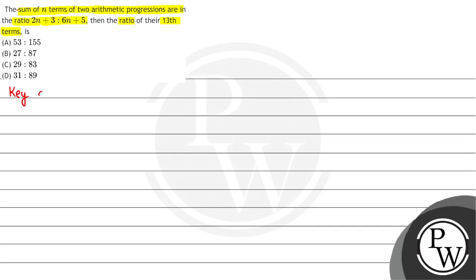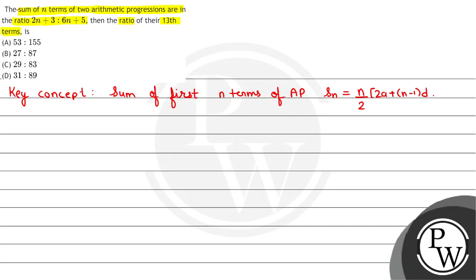Let's understand the key concept. Sum of first n terms of an AP: the formula is n/2 × (2A + (n−1)D), where A is the first term and D is the common difference. The second formula is the nth term of an AP, which is a + (n−1)D.